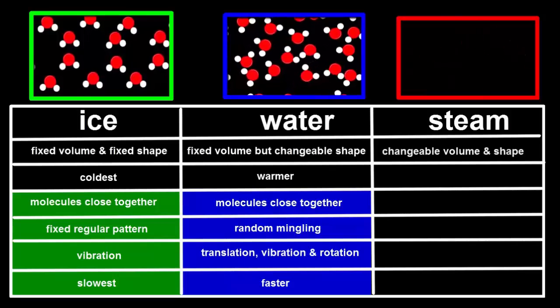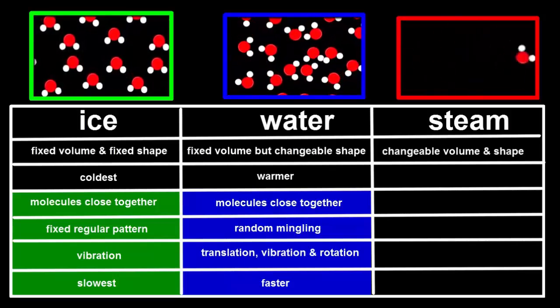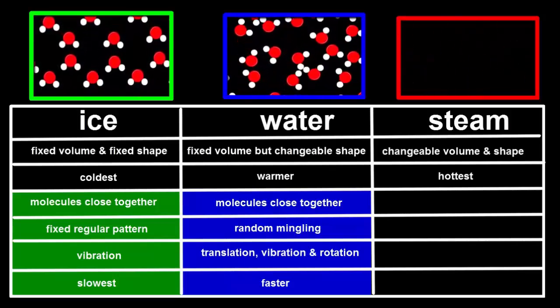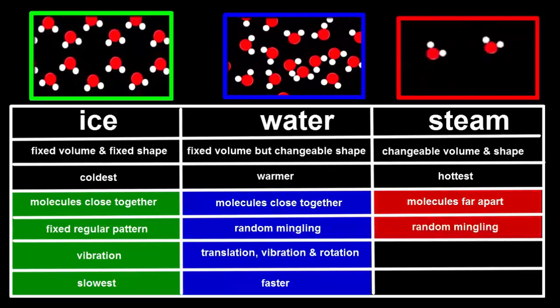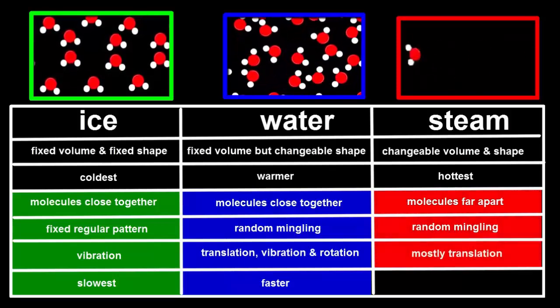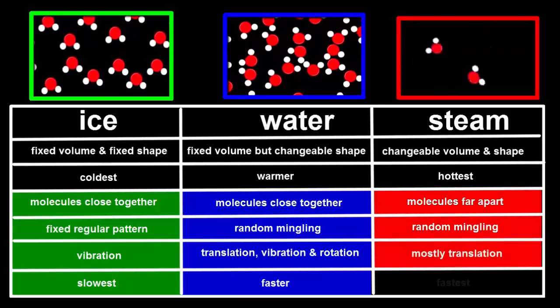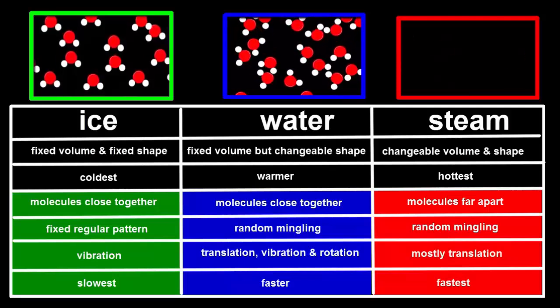Gases have both a changeable volume and a changeable shape, and they're the hottest state. Their molecules are far apart, randomly arranged, mostly translating in straight lines until they collide, and moving the fastest of all the states.